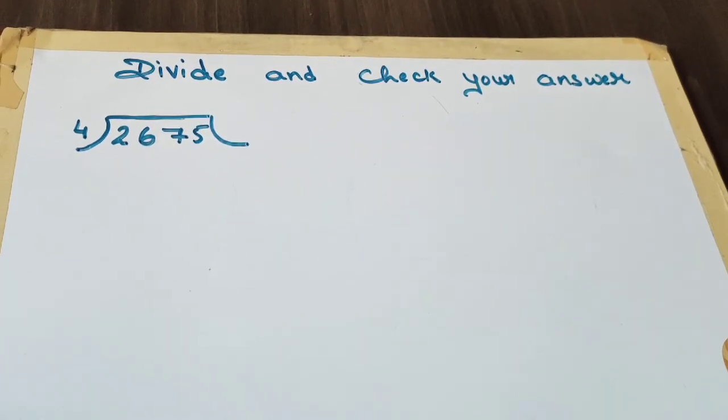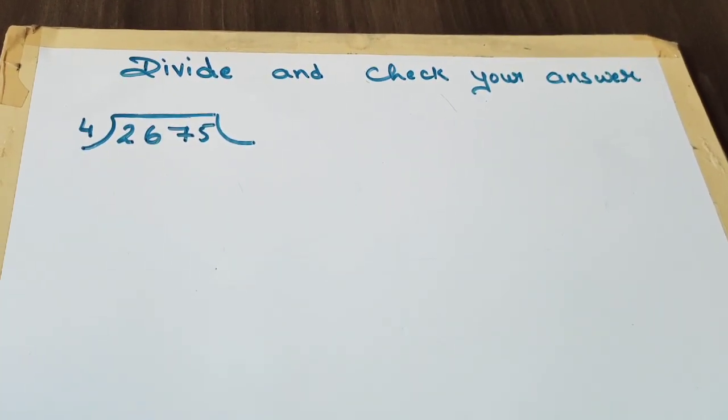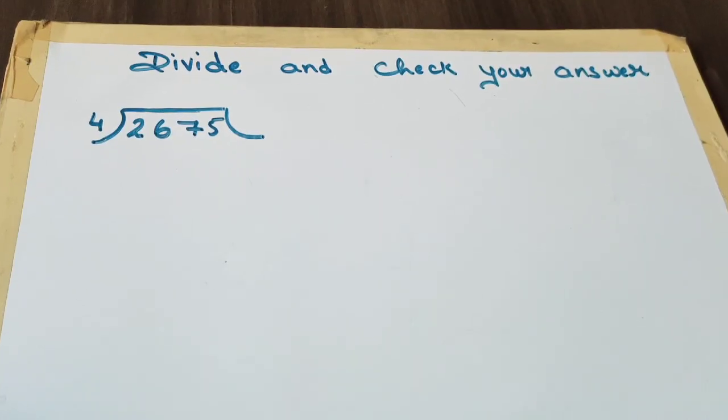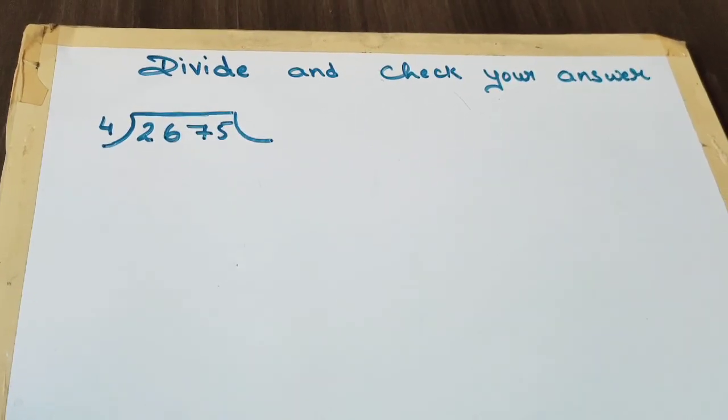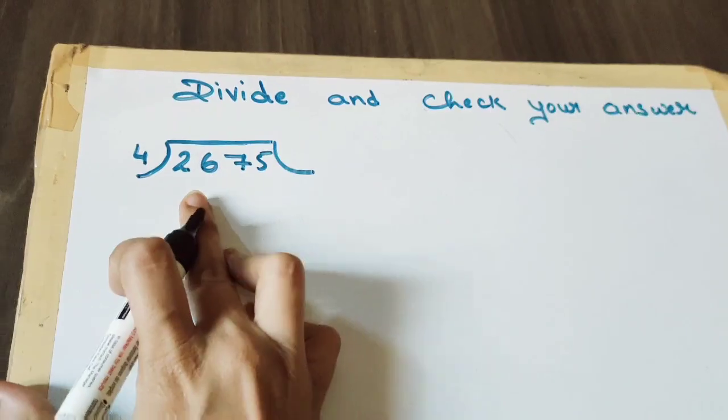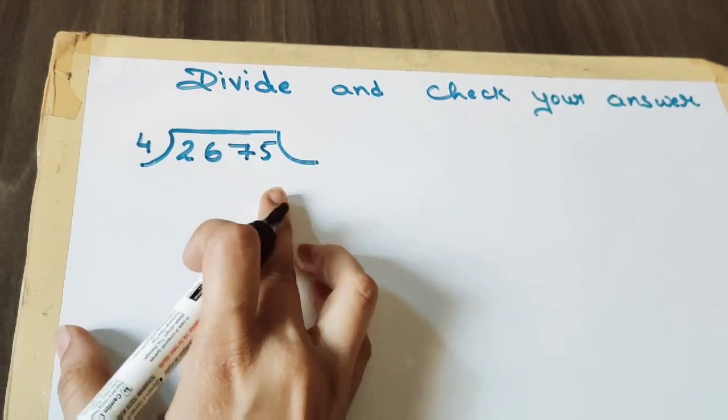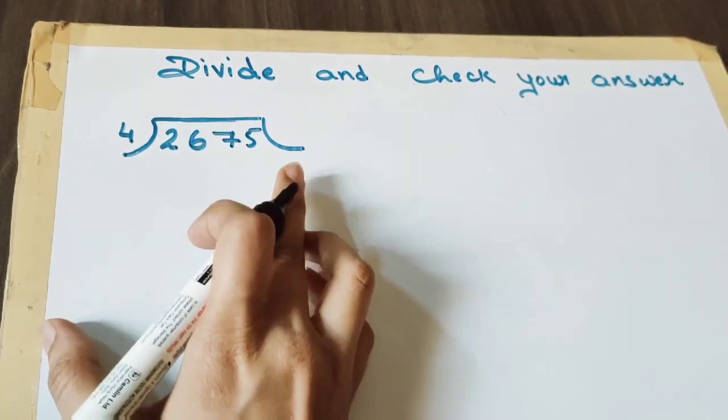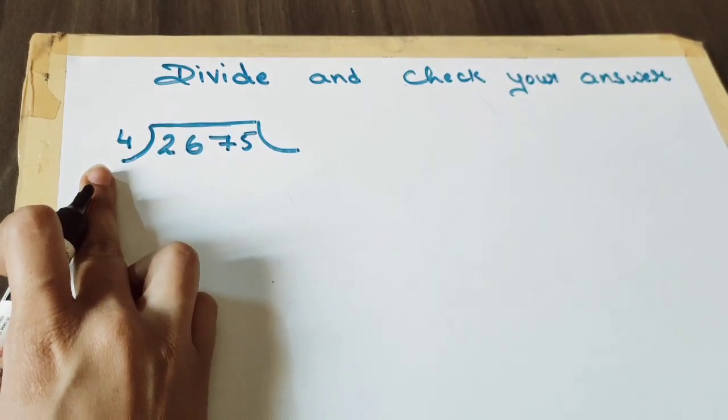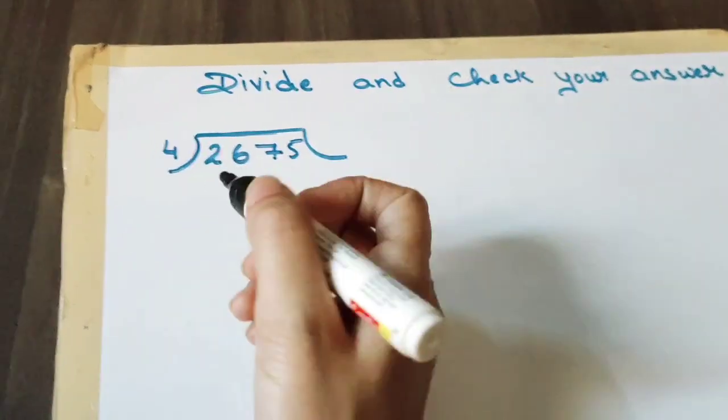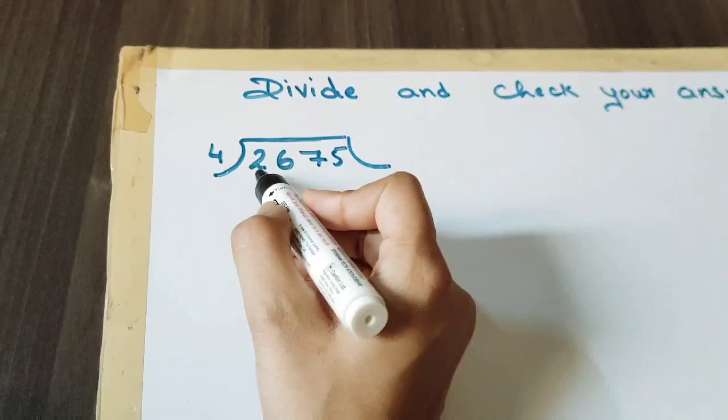Today I am going to teach you divide and check your answer. Now let's see how to divide a number. There is a number 2675, we have to divide this number by 4.